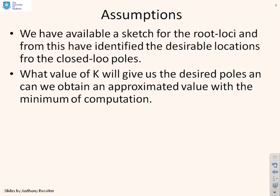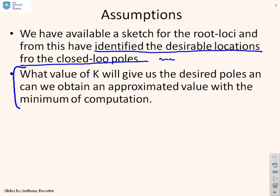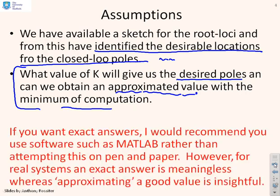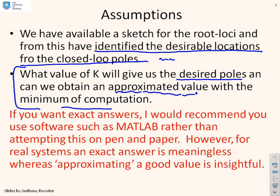Our assumptions: we assume we've got a sketch of the root loci, and from this sketch we identify desirable locations for the closed-loop poles. Having done the sketch, we can say this is where I want my poles to be, and then ask what value of K will give me those poles. Using a sketch gives an approximate value with very little computation — it's a pen-and-paper exercise. For exact answers, use software such as MATLAB, but for real systems approximations give good insight.